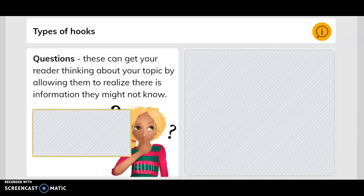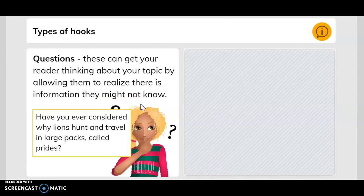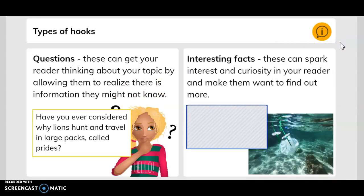Questions - these can get your reader thinking about your topic by allowing them to realize there is information they might not know. Have you ever considered why lions hunt and travel in large packs called pride? Interesting facts - these can spark interest and curiosity in your reader and make them want to find out more. Every year eight million tons of garbage are dumped into our oceans.